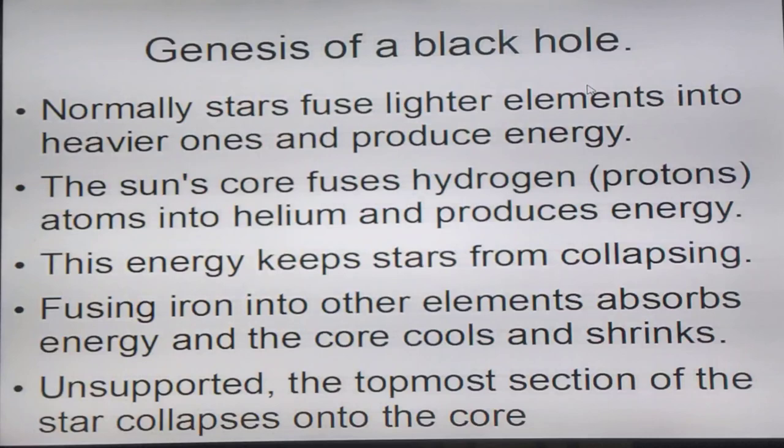Large stars don't just fuse hydrogen and helium. They can go on fusing carbon and nitrogen and so forth until the core is filled with iron. Eventually the star tries to fuse iron into elements. The problem is that fusing iron is an endothermic reaction. It absorbs heat. So when it starts fusing in a split second, the core cools down and shrinks. Without the energy supporting the star, the topmost section of the star collapses onto the core.